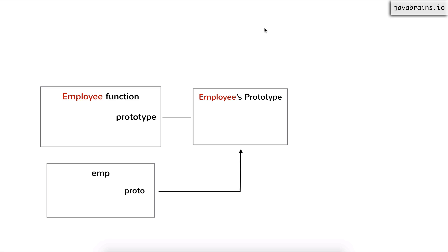So the picture looks something like this: it's the employee function, the employee's prototype, and then an instance whose dunder proto points to the prototype. Remember, in the last video, I told you how if you're not using an explicit constructor, then there is this default constructor function, which is the object function. And that happens for any object that's created without an explicit constructor function.